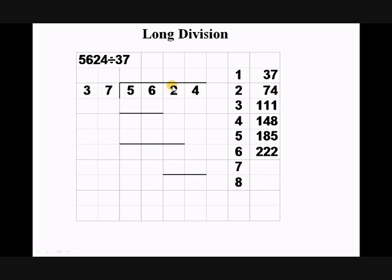So I'm going to put 1 there as my result. And 37 which is 1 times 37 there. And I'm going to work out a remainder by taking 37 away from 56. The answer to that is 19. What I now do is I pull this 2 down to here.